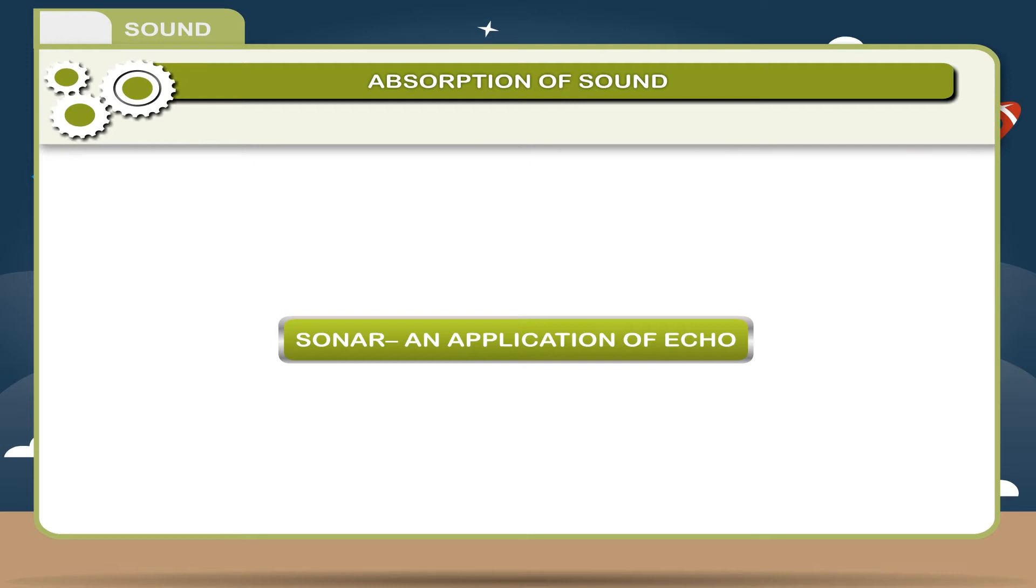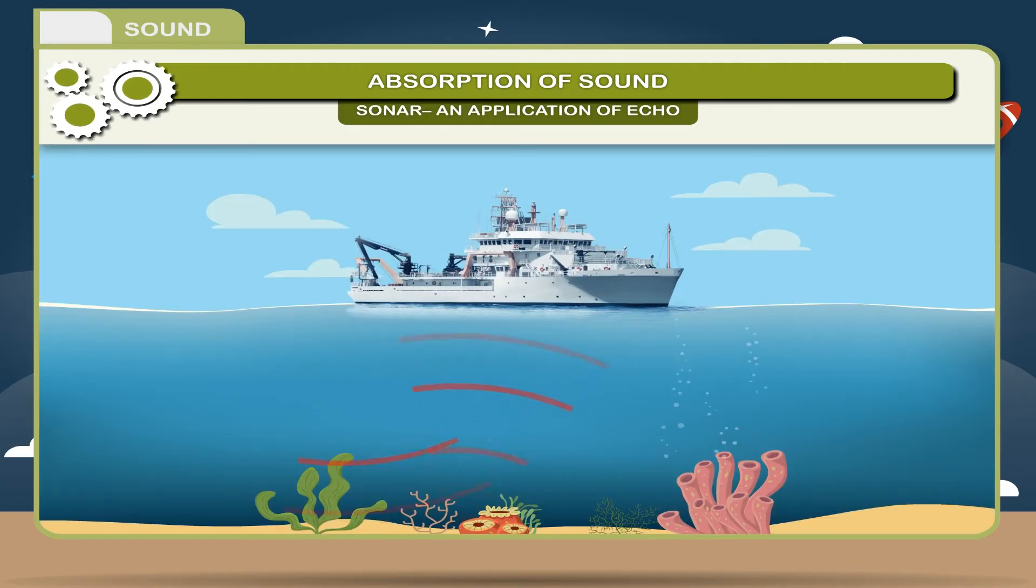Sonar: An application of echo. The property of reflection of sound is utilized in sonar, sound navigation and ranging, which produces and receives ultrasonic waves after reflection from an obstacle. It is used in ships, submarines, etc.